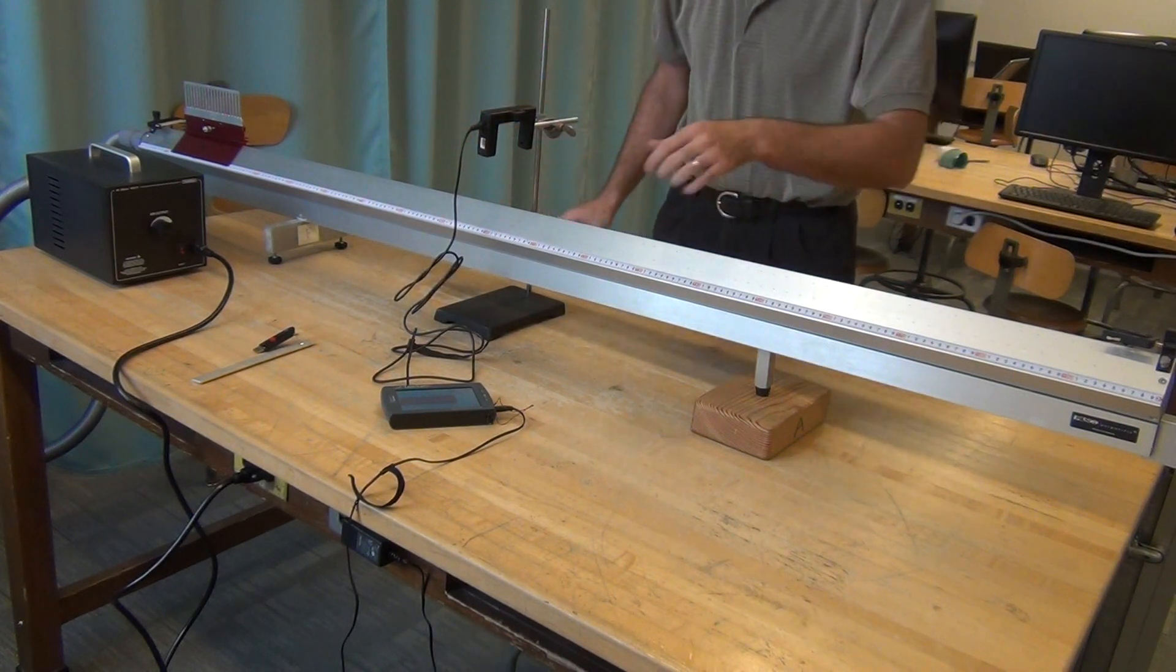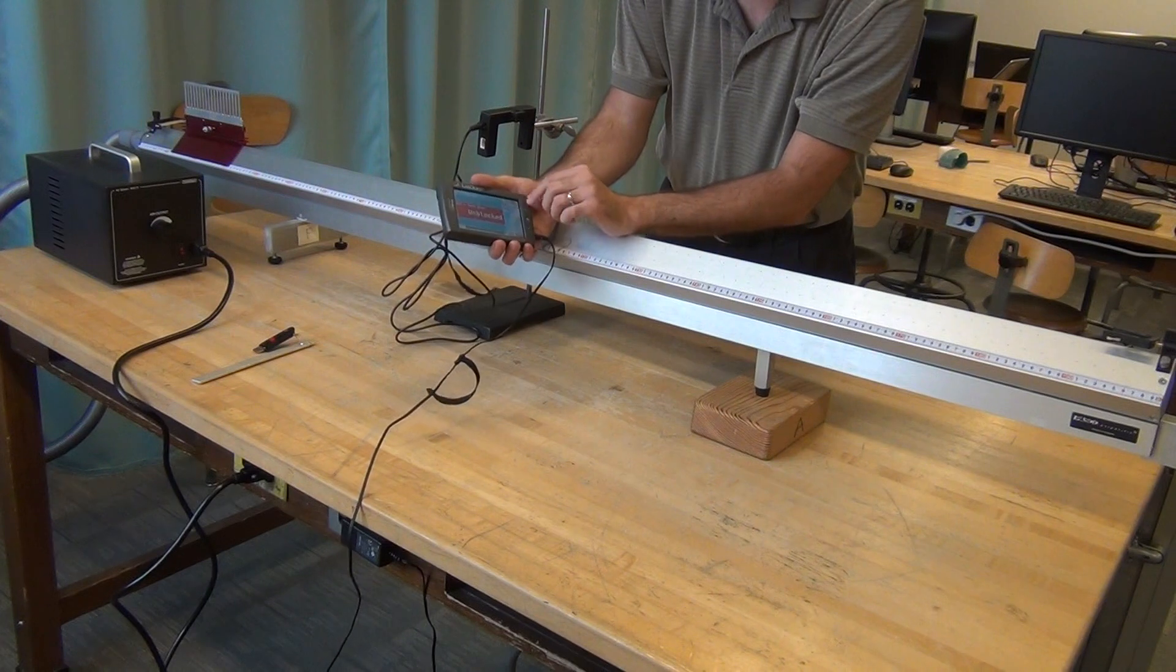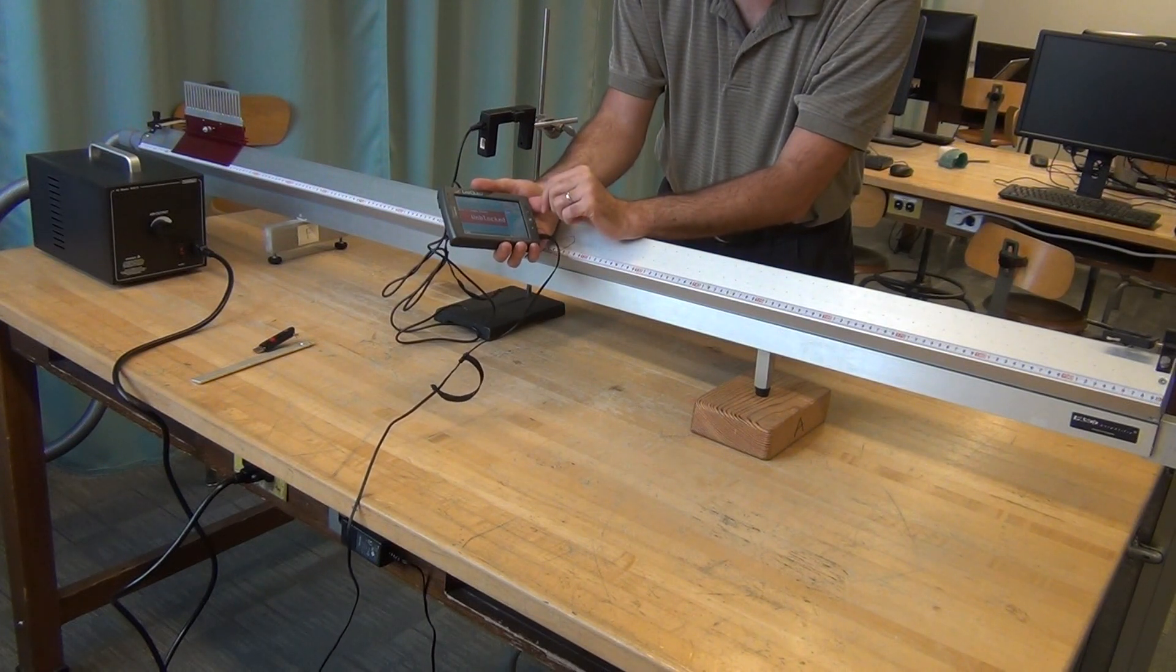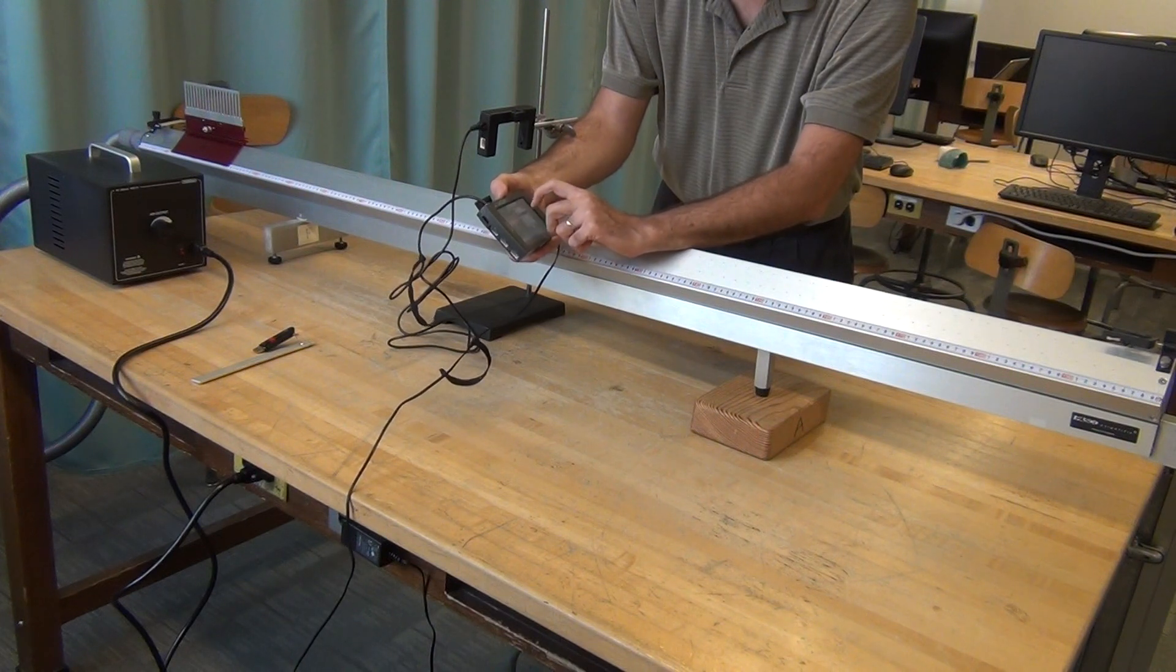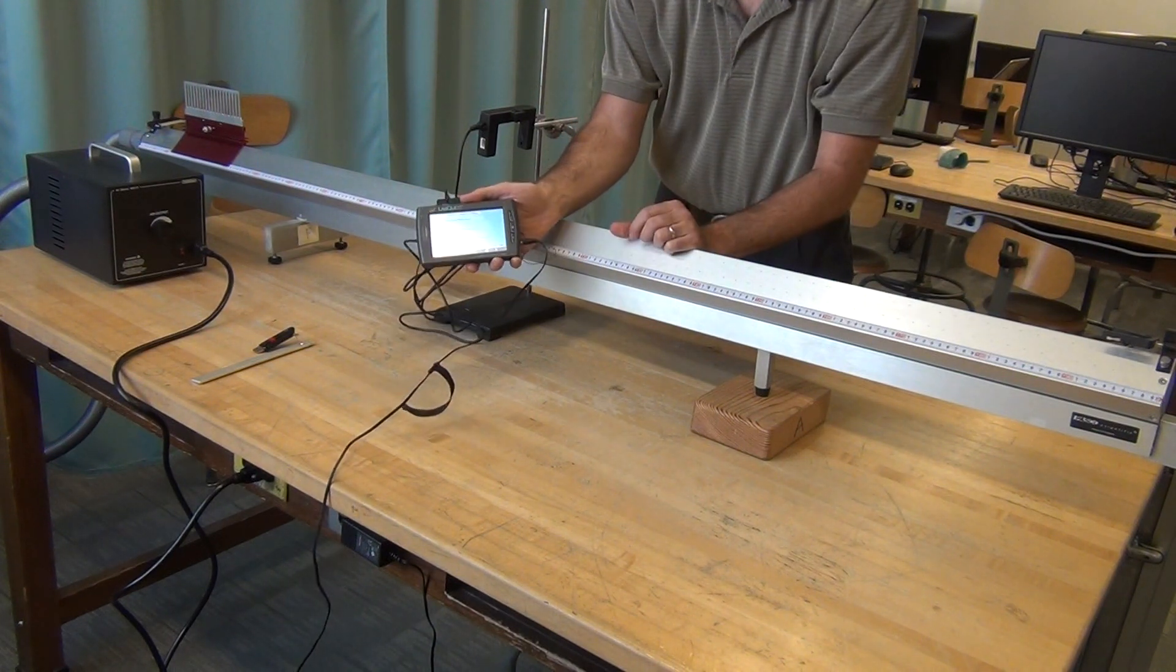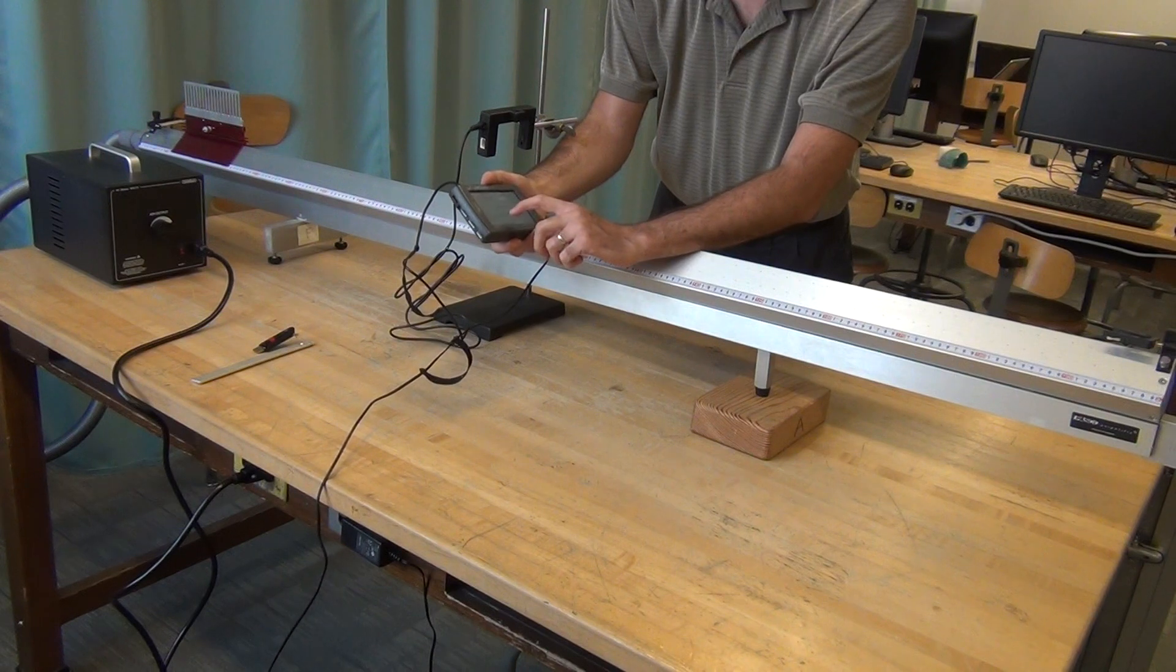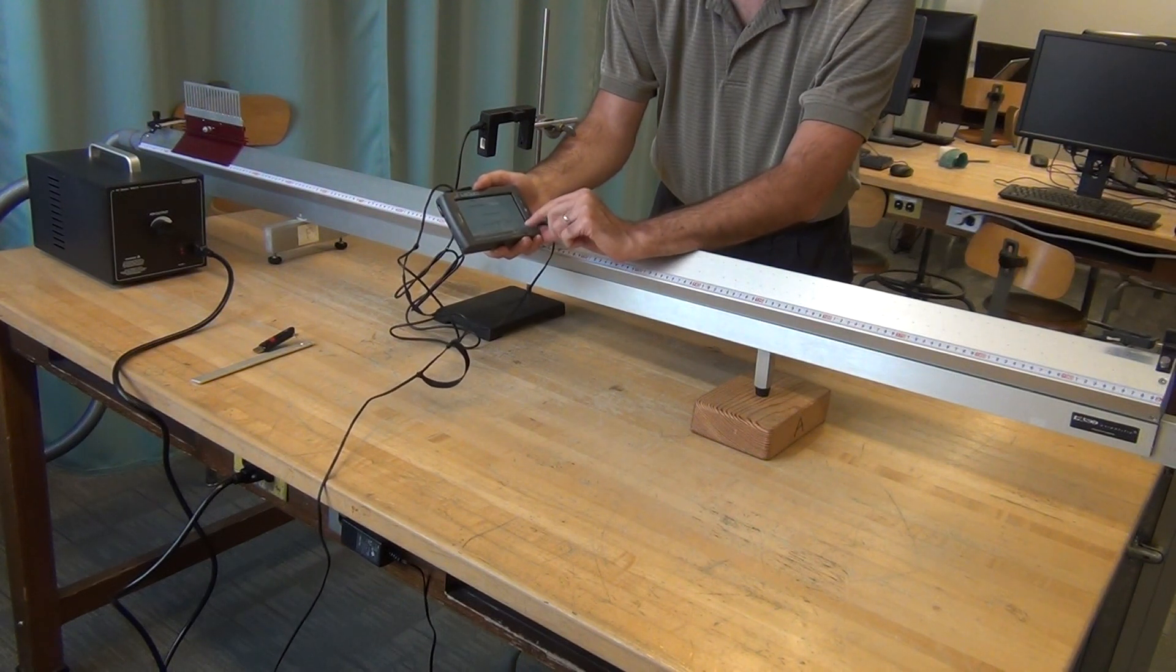The photogate is connected to a LabQuest, a computer for measuring. Its mode is photogate timing. I want to set the timing mode to be none so that it doesn't give me any spurious information, and then I want to make sure it says end data collection with the stop button.